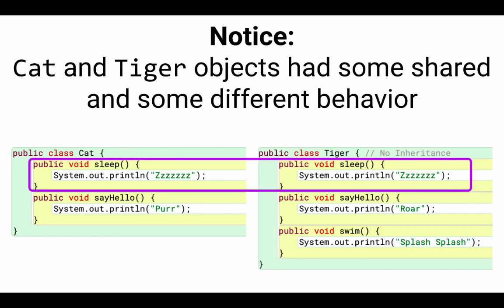And most importantly, I want to draw your attention to the fact that they had identical code for their sleep method. And our next step will be to use inheritance to avoid some of this duplicated code. You'll find that in part three.